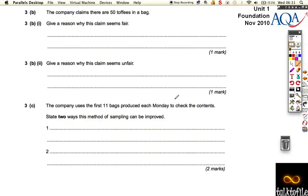Well, we know that the mode was 51, and the median was 51, but when they calculated the mean, they calculated it as 50. So it seems fair, because actually, when they did the calculation, all the averages came out as 50 or 51.